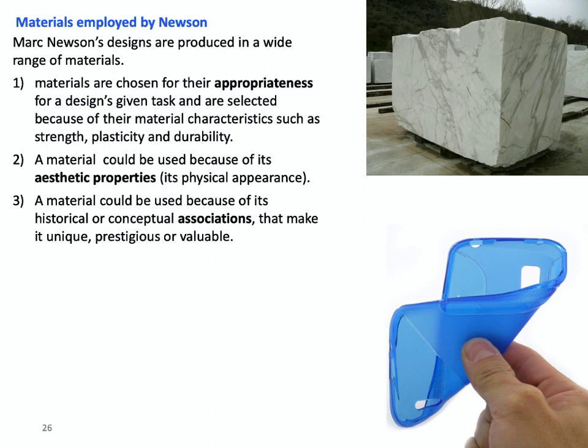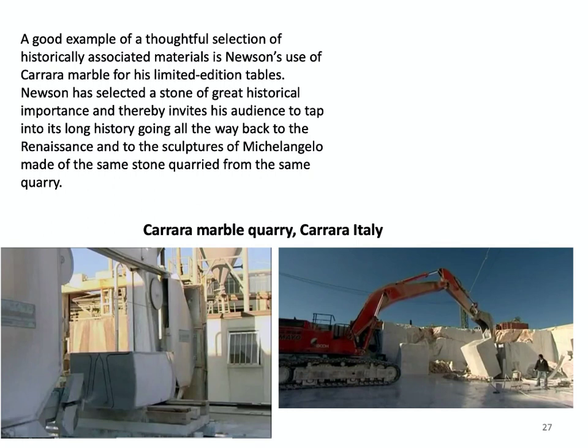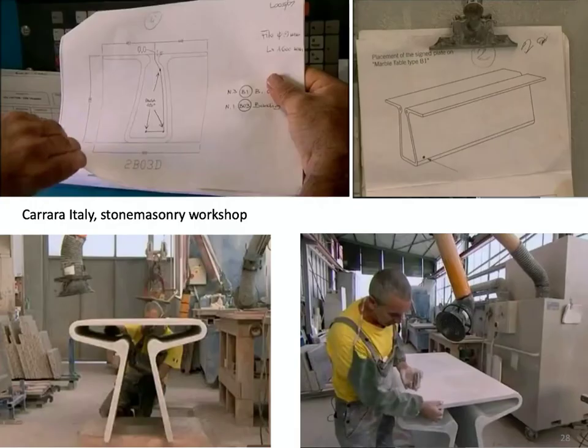A good example of a thoughtful selection of historically associated materials is Newson's use of Carrara marble for his limited edition tables. Newson has selected a stone of great historical importance and thereby invites his audience to tap into its long history, going all the way back to the Renaissance and to the sculptures of Michelangelo, made of the same stone, mined from the same quarry.